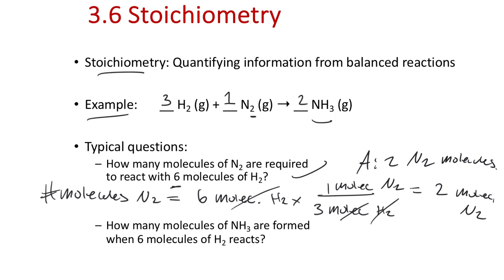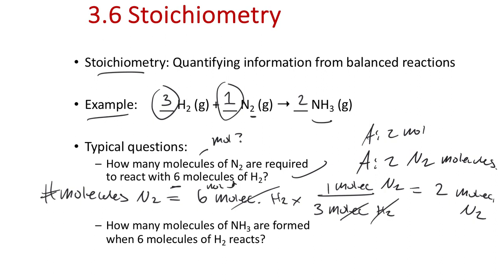If the question asked how many moles of N₂ react with six moles of H₂, the answer is still 2 moles of N₂ — the math is the same. Remember, a molecule is just one individual entity, while a mole is Avogadro's number of that entity. So 6 moles of H₂ is just 6 times Avogadro's number of H₂ molecules, and we need 2 times Avogadro's number of N₂ to react with it.